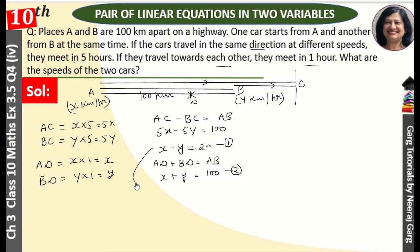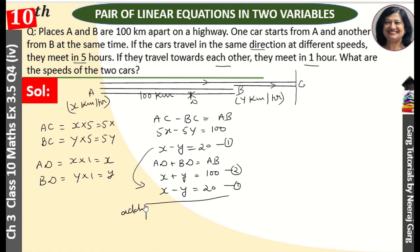Now we solve these two equations. Equation 1: x minus y equals 20. Equation 2: x plus y equals 100. Adding both equations, the y terms cancel, giving 2x equals 120, so x equals 60.